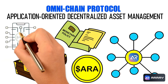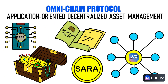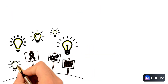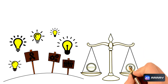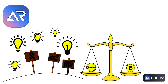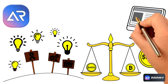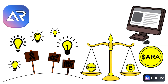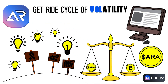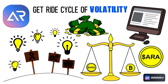Array is an omni-chain protocol for application-oriented decentralized asset management dedicated to building a next generation algorithmic currency system. It was inspired by other early projects on the algorithmic stablecoin track. Array goes a step further in concept, redefines the potential of algorithmic currency, simplifies complex steps of application interaction, and allows Web3 to get rid of the cycle of volatility while still enjoying the creation of wealth.